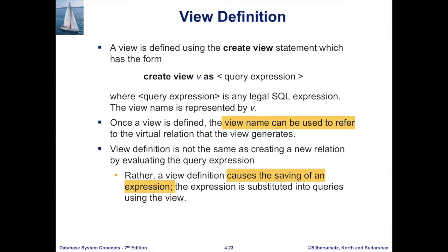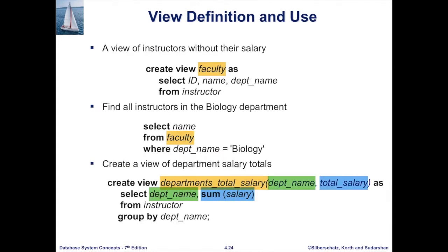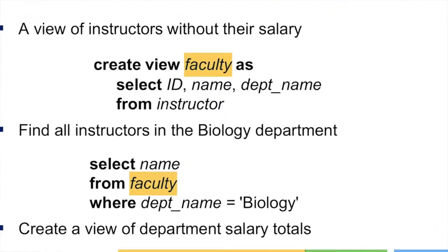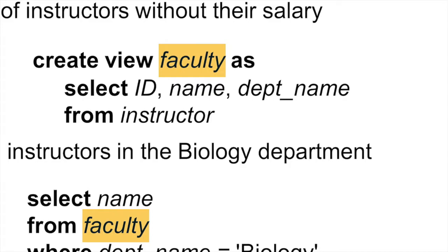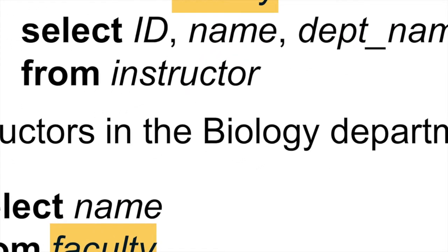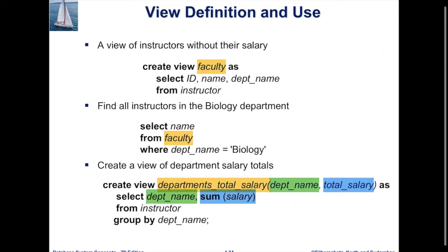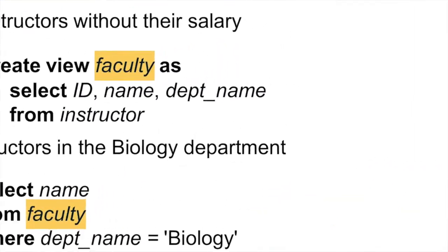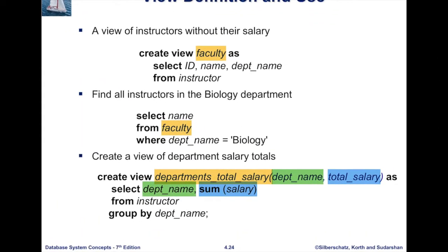We can create a view using the CREATE VIEW operation: 'create view V as query expression.' Once a view is created, you can use the view name V in other queries. For example, we can create a view for faculty without salary: 'create view faculty as select ID, name, department from instructor.' You just add 'create view name as' before the regular query, and then you can use the view name 'faculty' to refer to that whole query.